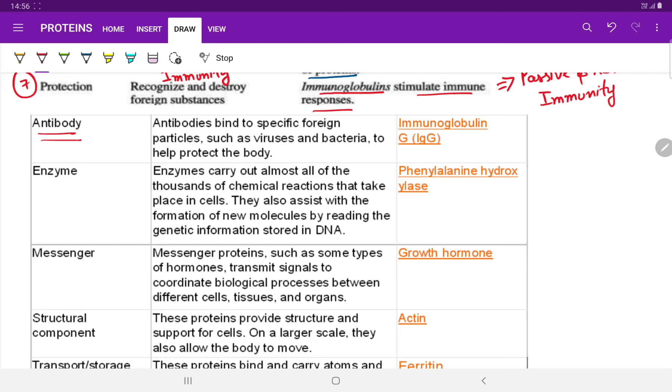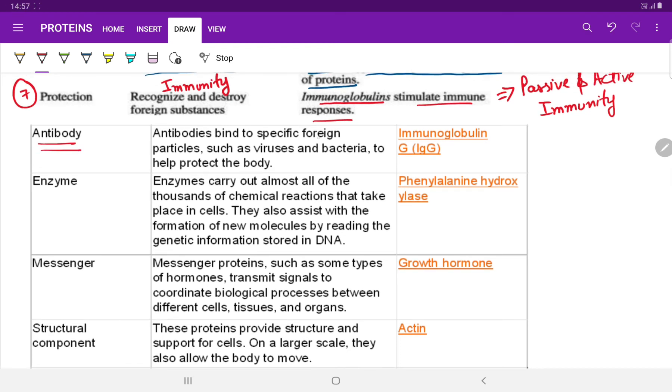One is antibody. The antibodies bind to specific foreign particles such as viruses, bacteria to help and protect the body against such infections. The commonest example is IgG antibodies or we can say them as immunoglobulin type G.